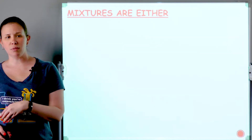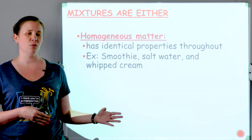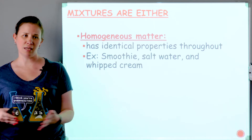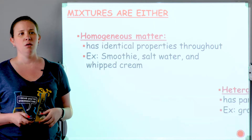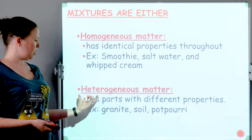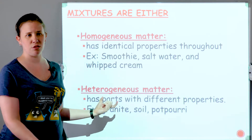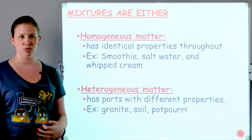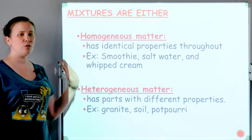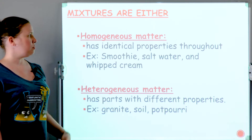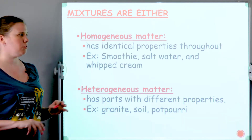Now let's talk about mixtures. Mixtures could either be homogeneous — meaning the same throughout; 'homo' actually meaning same — or heterogeneous, 'hetero' actually meaning different, having a different composition throughout. 'Geneous' kind of refers to the composition. Is it the same composition or a different composition? Some examples help with identifying homogeneous versus heterogeneous.